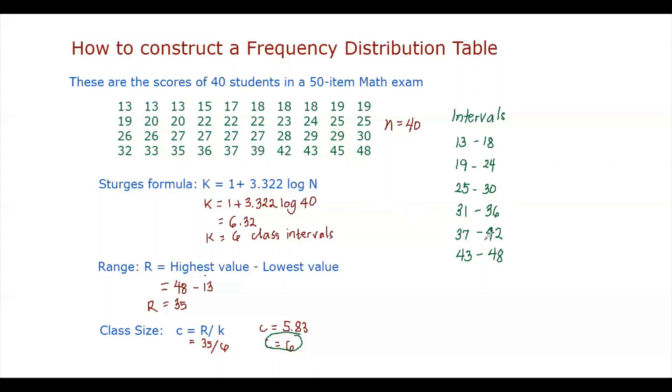Now look at the last upper class limit. Is the highest value in the data set found in the last class interval? If yes, then there's no need to add another class interval. So for example, if we only got 47 here, then we have to add another class interval. So we have to add 6, 43 plus 6, and then the upper class limit. But since we already have the highest value in the last interval, there's no need for that.